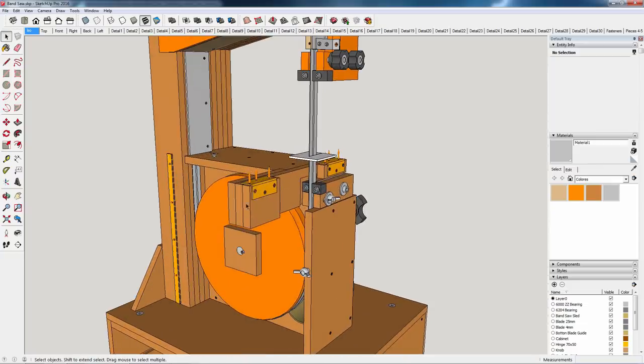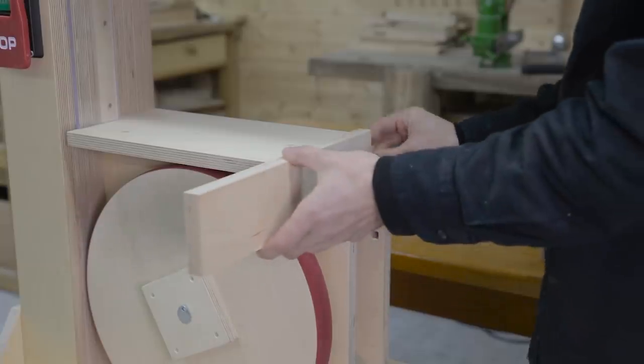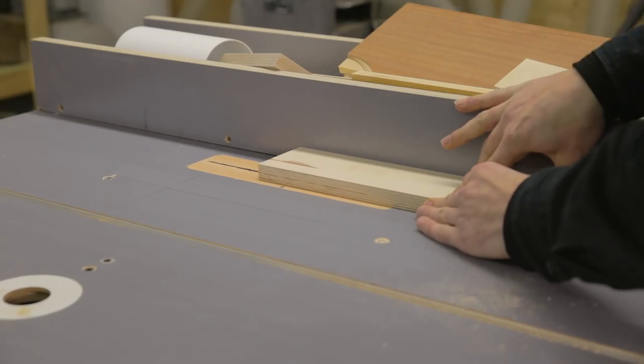Now I'll machine these parts that will support the hinges that allow me to tilt the table. I make the rebates according to the plans and glue the two parts in.